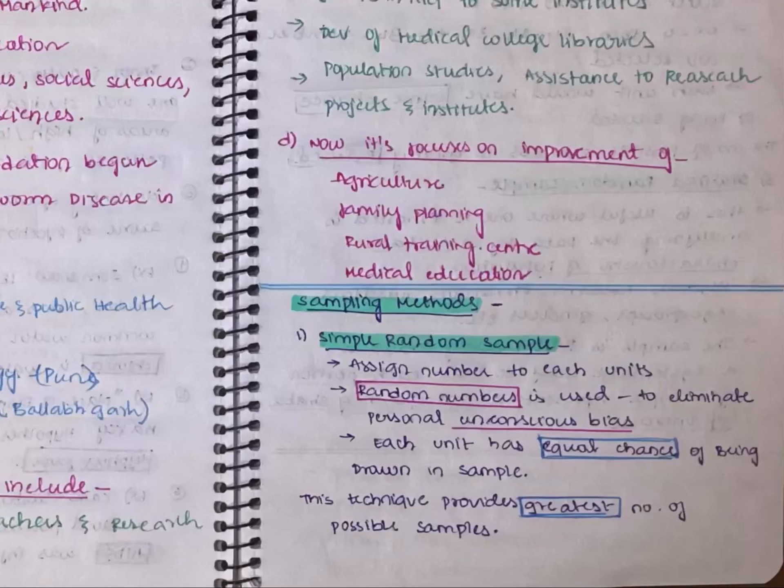We'll talk about sampling methods. It is of three types. The first is simple random sample, second is systematic random sample, and the third is stratified random sample.